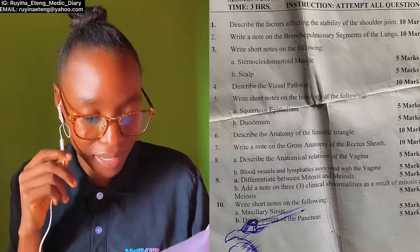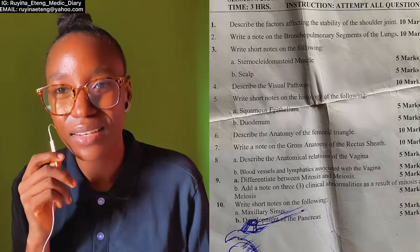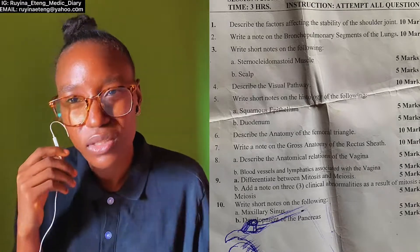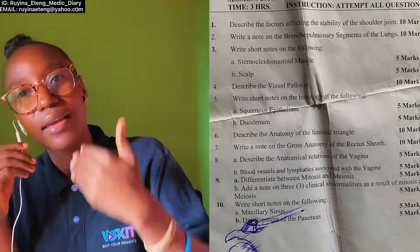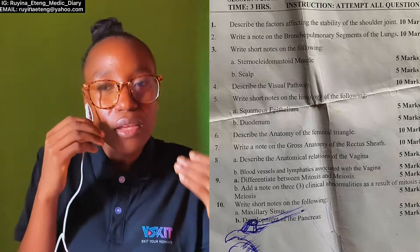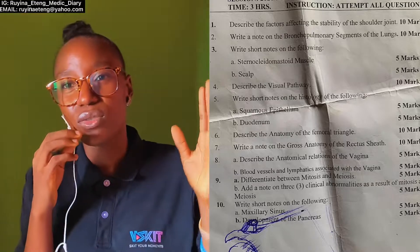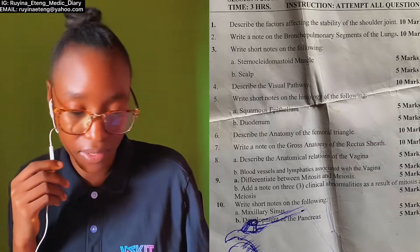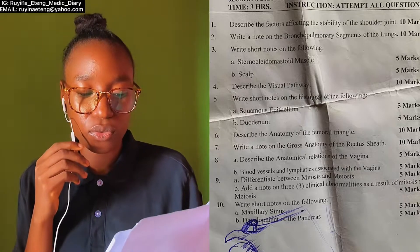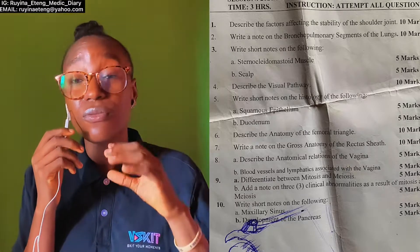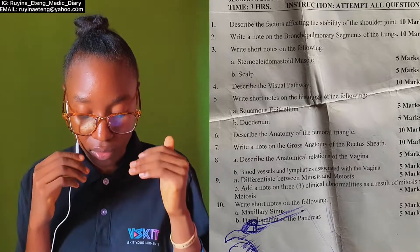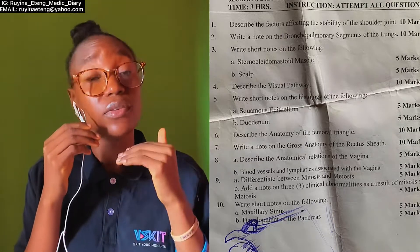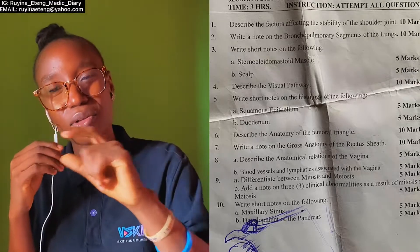Number eight is straightforward — no need for stress. Eight A is easy to get full marks: anatomical relations of the vagina. Superiorly, inferiorly, laterally, anteriorly, posteriorly — for each direction state what the vagina is related to. Superiorly it is related to this and this; inferiorly it continues as this; laterally it is related to this. Those are the little things you should write. That one is an easy five marks. For eight B, blood vessels and lymphatics associated with the vagina — if you can draw a diagram, draw it. It will help you a lot.